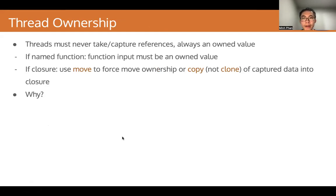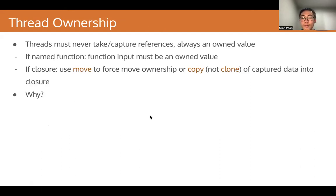In the last lecture, we established that threads must never take or capture references — it always needs to be an owned value. If the thread is associated with a named function, the function input must always be an owned value. And if it's a closure, we need to use the move keyword to force a move of ownership, or a copy of the captured data into the closure.